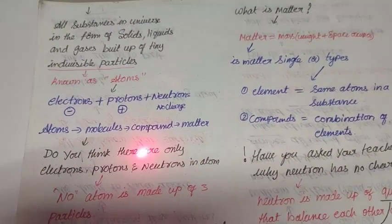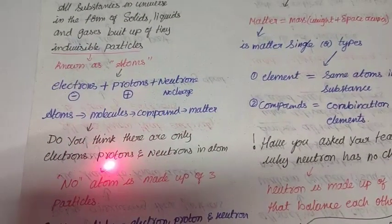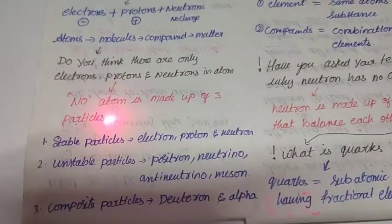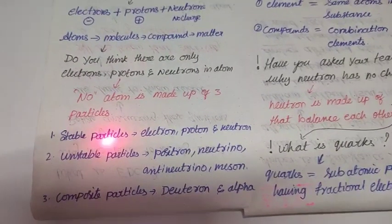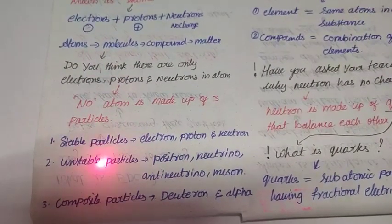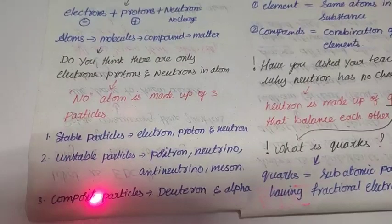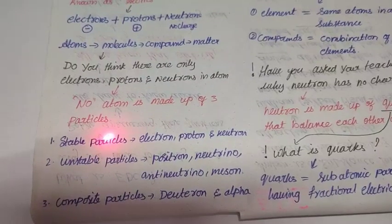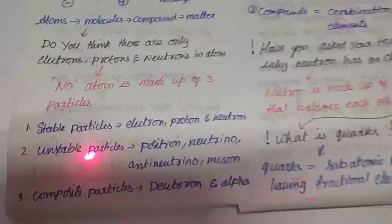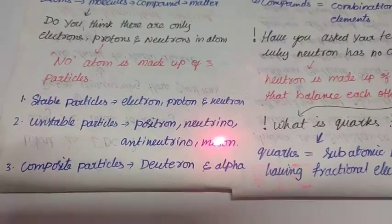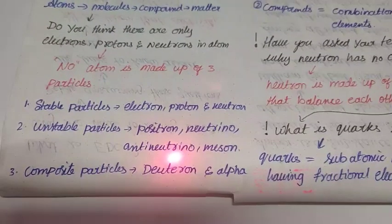Neutron has no charge. Do you remember what is the charge of electron? Negative. Proton? Positive. Group of atoms called molecules, group of molecules called compounds, group of compounds called matter. In this way, there is a chain. Do you think there are only electrons, protons, neutrons in an atom? No, atom is made up of three types of particles: stable particles, unstable particles, and composite particles.